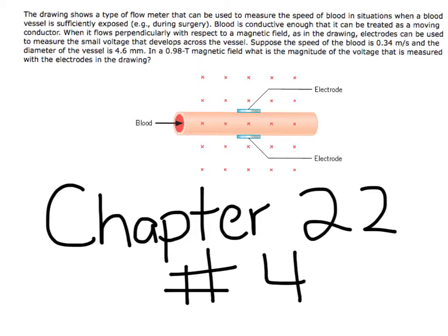Suppose the speed of the blood is 0.34 meters per second and the diameter of the vessel is 4.6 millimeters. In a 0.98 tesla magnetic field, what is the magnitude of the voltage that is measured with the electrodes in the drawing?